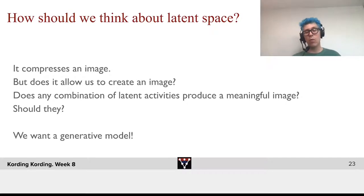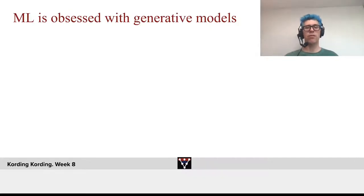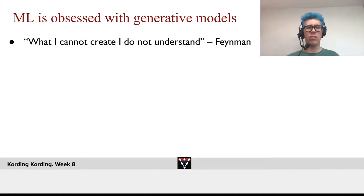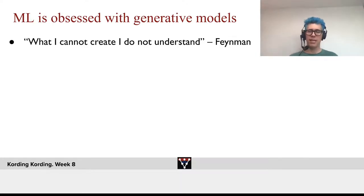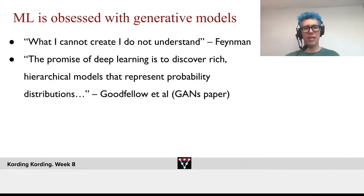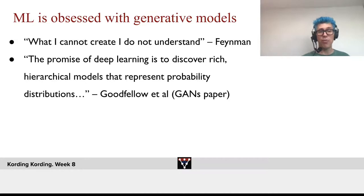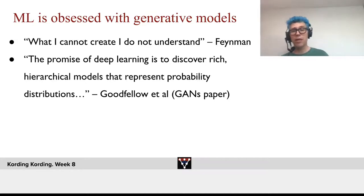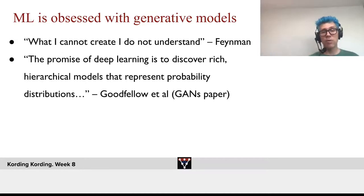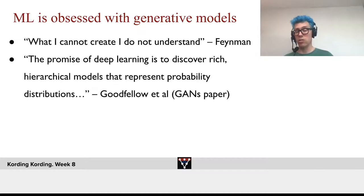What we really want is a generative model. Machine learning, in a way, is obsessed with generative models. Feynman said, what I cannot create, I do not understand. And machine learning suddenly takes up that idea. Goodfellow, for example, says the promise of deep learning is to discover rich hierarchical models that represent probability distributions.